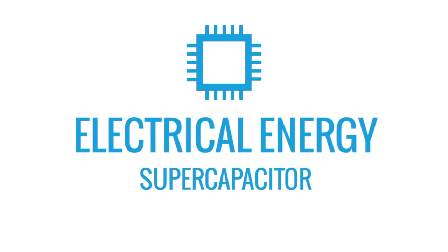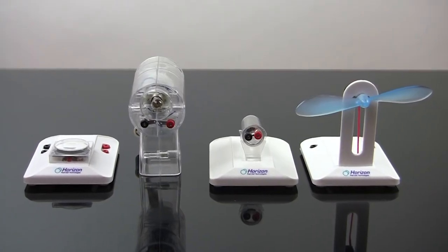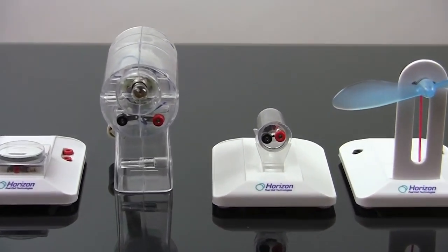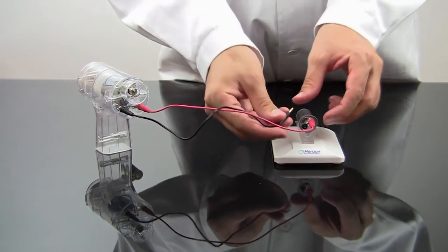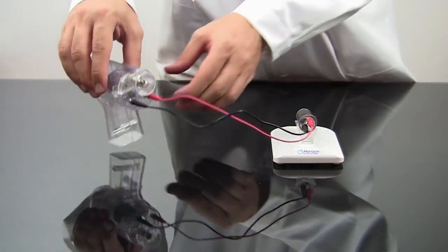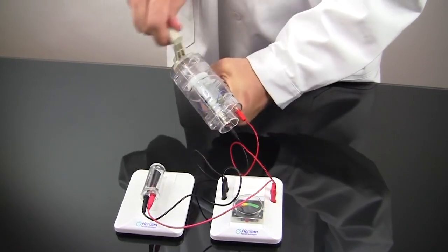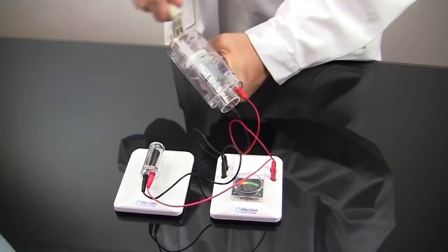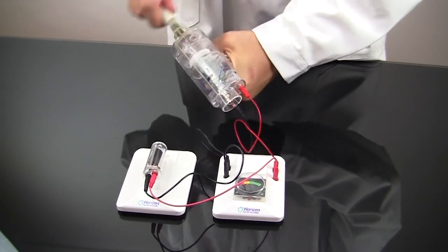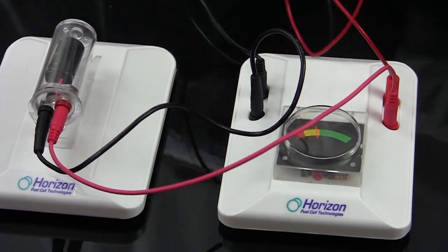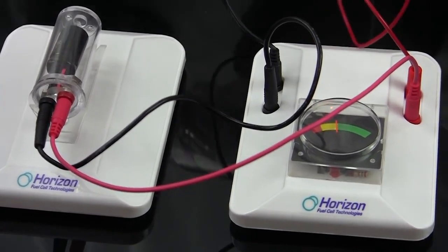Students can harness their body's own energy with the supercapacitor and hand crank generator. Just turning the handle generates electrical energy. You can connect them directly or use the potentiometer to know when the supercapacitor is full. Be sure to turn the generator clockwise to avoid damaging the supercapacitor. When the needle on the potentiometer is in the green, hook up the fan motor to unleash the stored electrical energy.